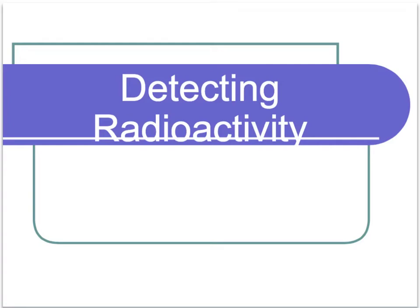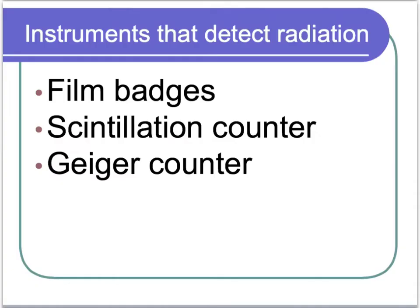This is the third lecture for the nuclear chemistry lectures, and it'll follow along in your fill-in-the-blank notes right after what you finished for half-life in part two. So what we're going to look at first is ways of detecting radiation. Three instruments used to detect radiation are film badges, scintillation counters, and Geiger counters.